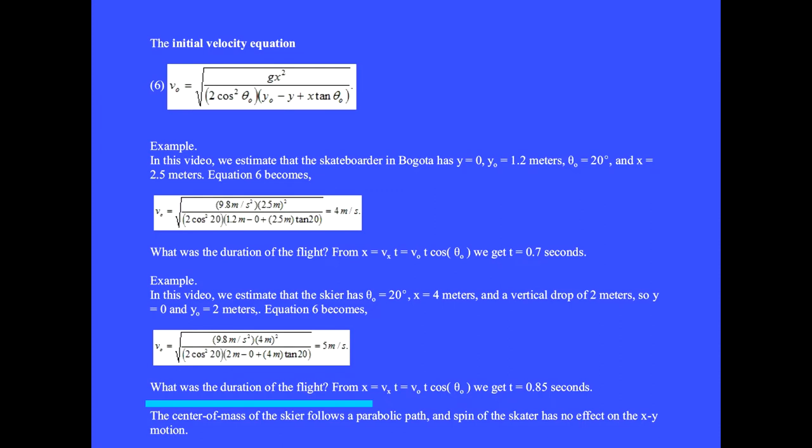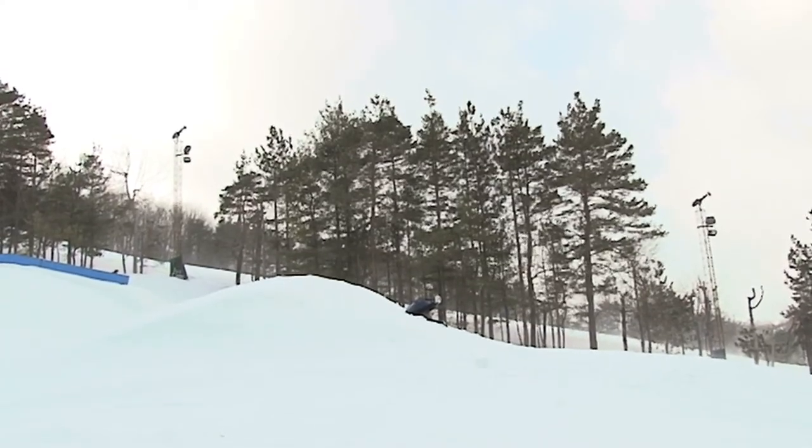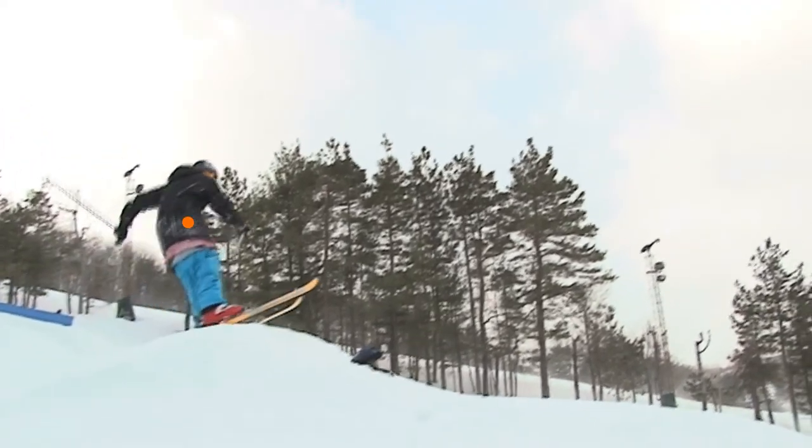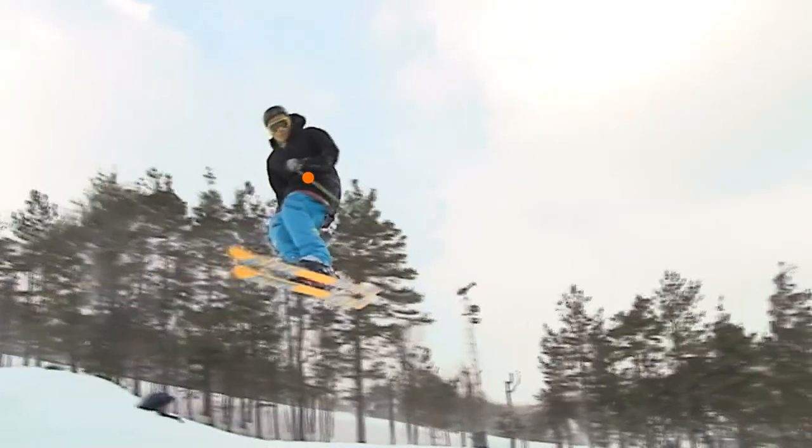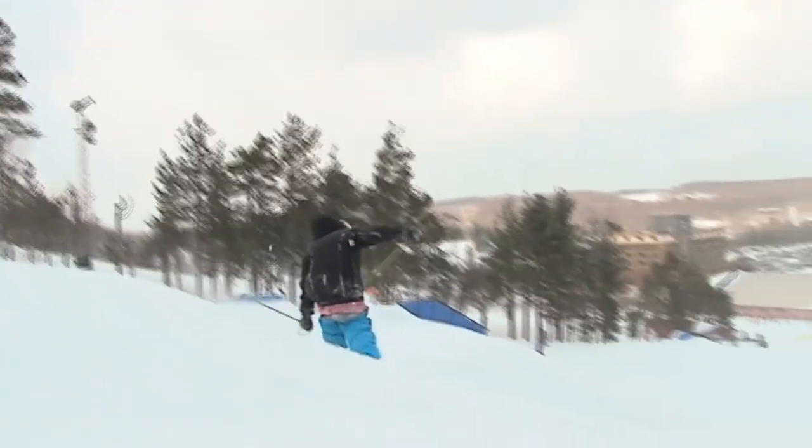Equation 6 gives a launch velocity 5 meters per second. What was the duration of the flight? The x motion gives us 0.85 seconds. The center of mass of the skier follows a parabolic path. The spin of the skier has no effect on the x-y motion. This will be a topic in the chapter on rotational motion.